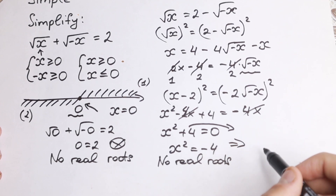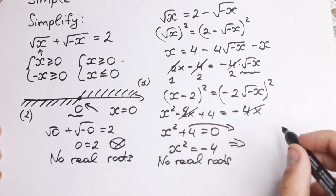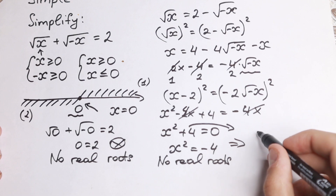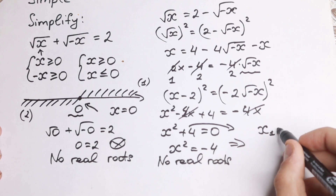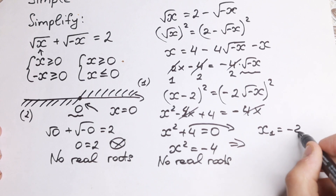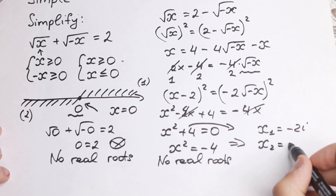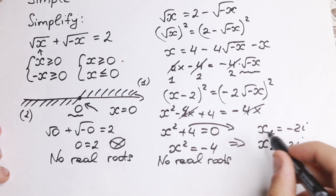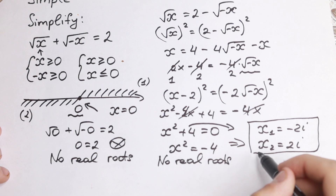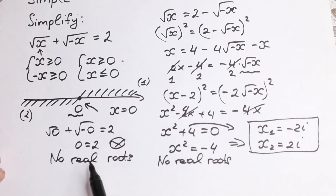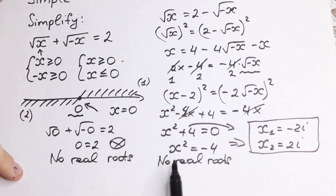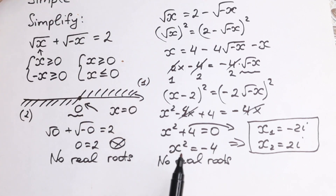But what about complex roots? From x² = −4 we get two complex roots: x₁ = −2i and x₂ = 2i. So no real roots using the inequality method, no real roots using the traditional algebraic method, and two complex roots: ±2i.